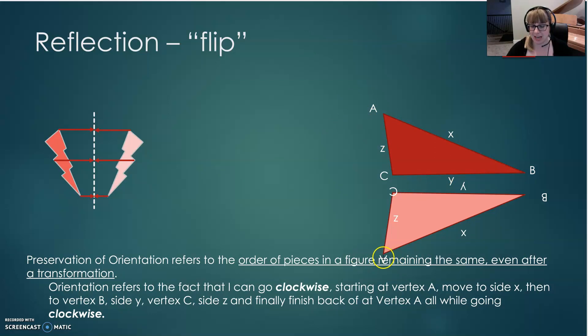Now, remember AX, BY, CZA is the goal. Let's start down here at A. A goes to Z, C, Y, B, X if I'm going in that clockwise motion. The goal is AX, BY, and I went AZ, CY. So again, we're seeing it one more time that the orientation is not preserved in a reflection.